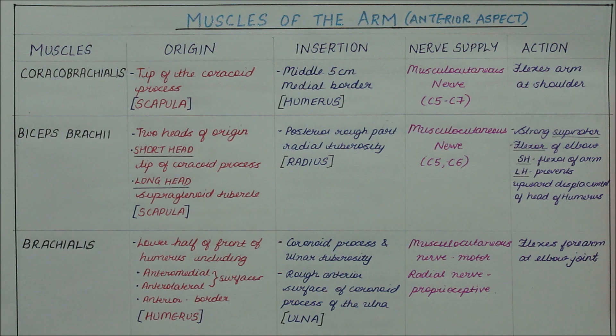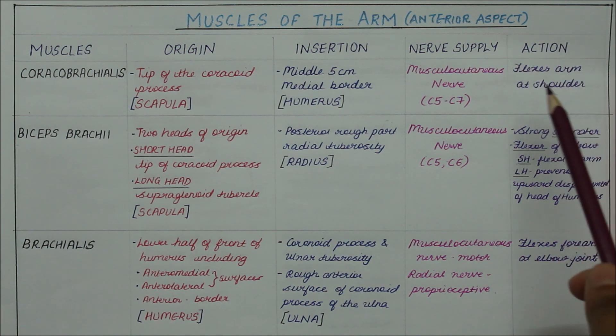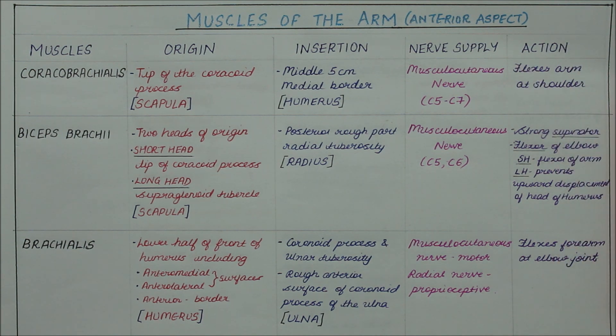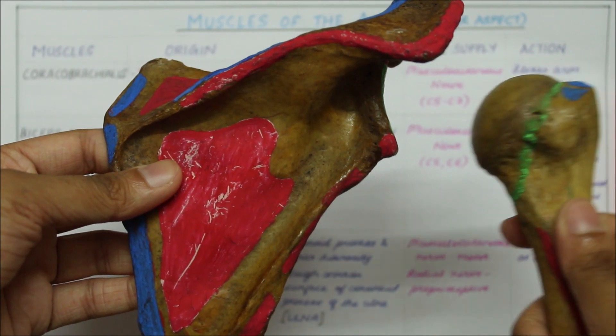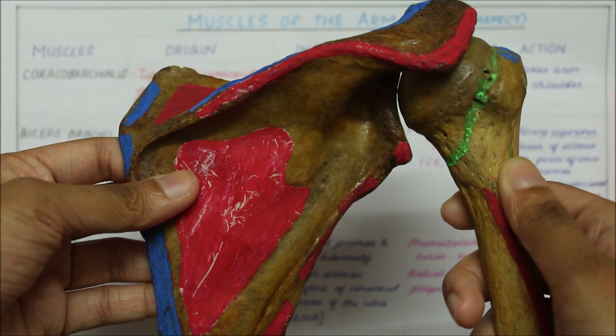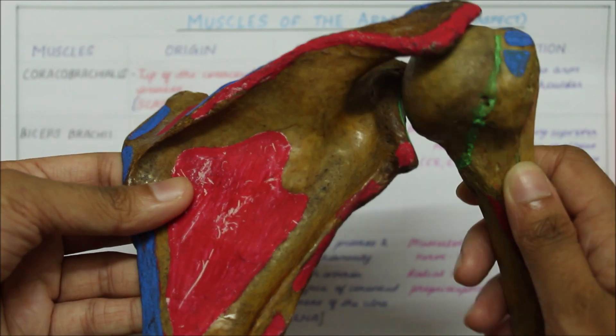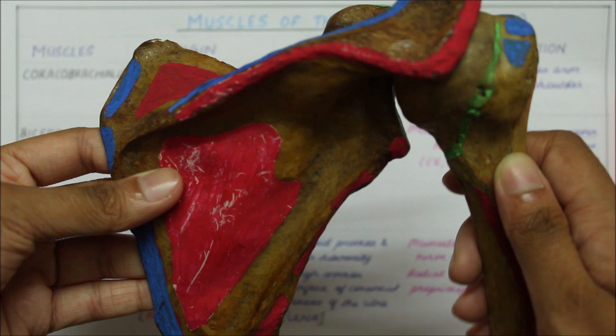The action of the coracobrachialis is that it flexes the arm at the shoulder. This is the flexion of the arm.